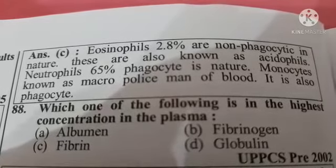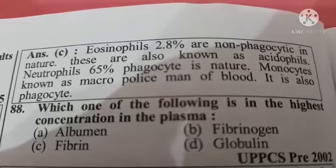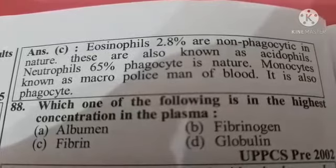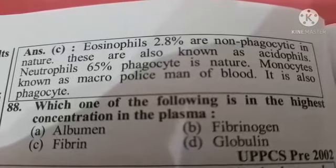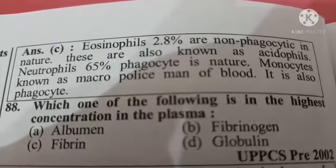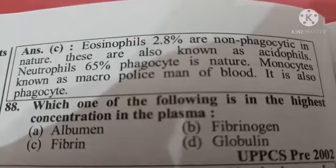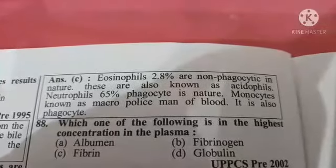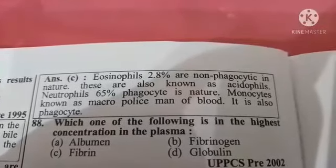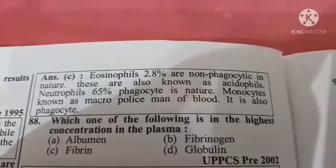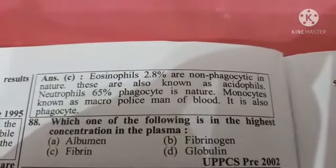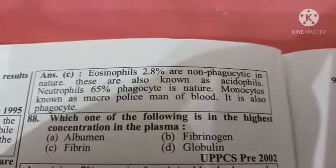Next question: which one of the following is in the highest concentration in plasma? Option A: albumin, Option B: fibrinogen, Option C: fibrin, Option D: globulin. The correct answer is Option A: albumin. Fibrinogen has the least concentration in plasma.